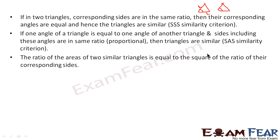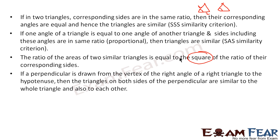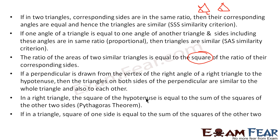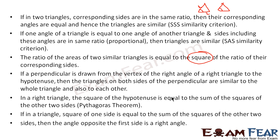The ratio of areas of two similar triangles is equal to the square of the ratio of their corresponding sides. If a perpendicular is drawn from the vertex of the right angle of a right triangle to the hypotenuse, the triangles on both sides of the perpendicular are similar to the whole triangle. In a triangle, if the square of one side equals the sum of squares of the other two sides, then the angle opposite to the first side is a right angle — this is the converse of Pythagoras' theorem.